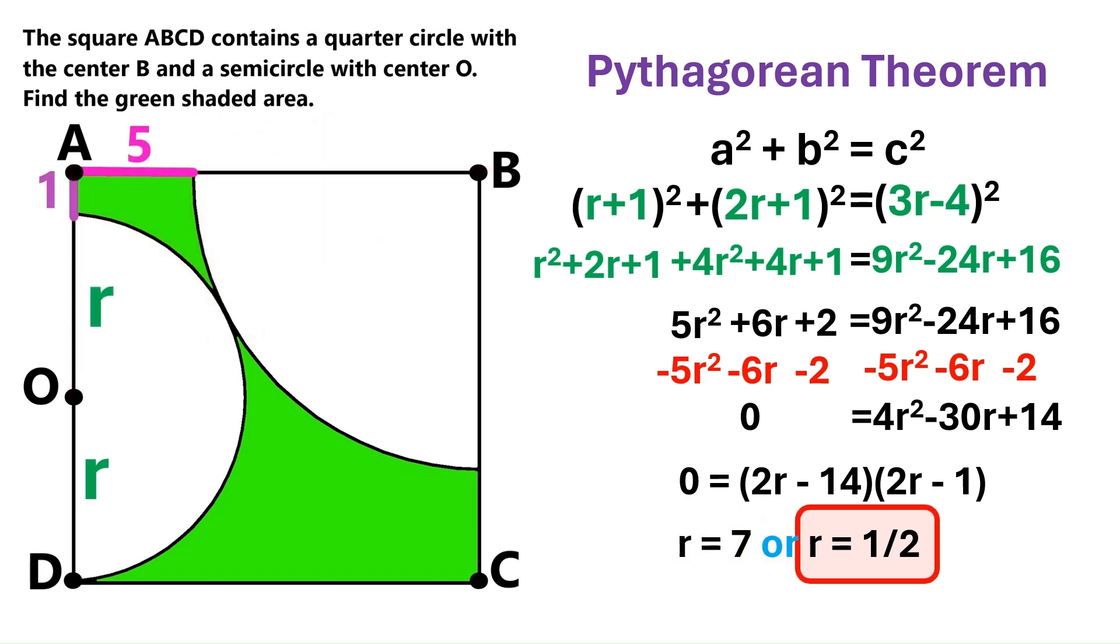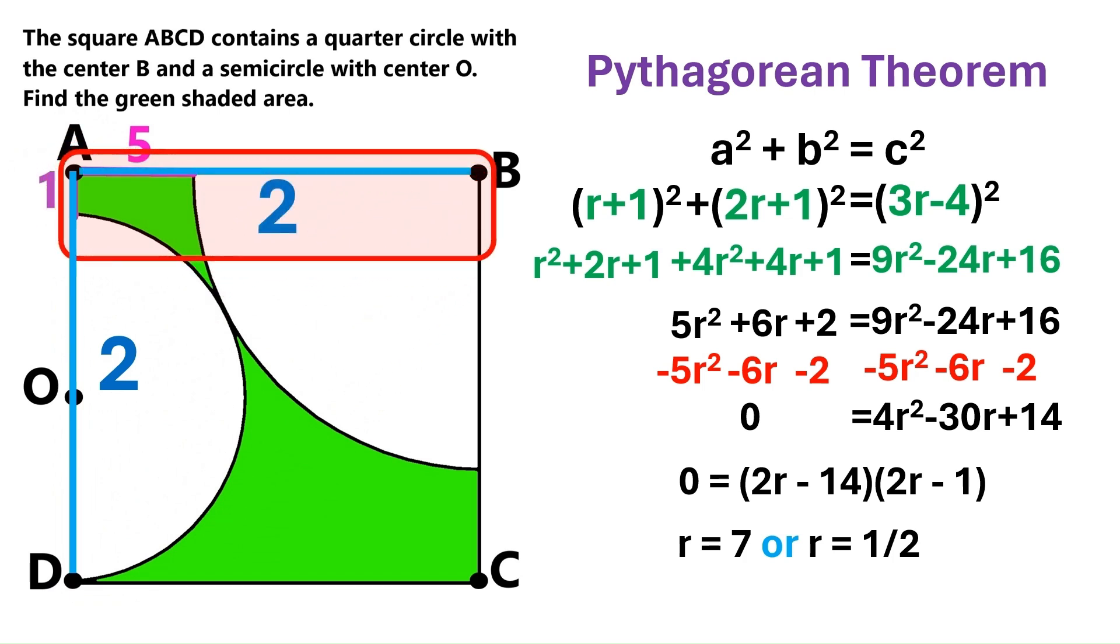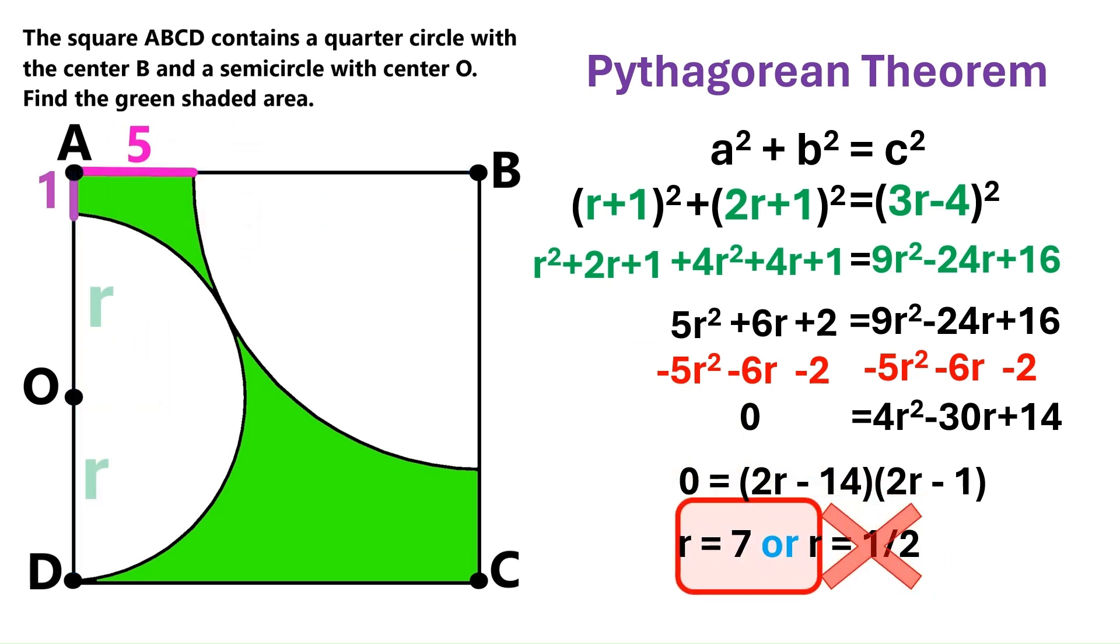Now, 1 over 2 looks weird and unlikely as a value for the radius of our semicircle. So let's try it to see what happens. r is this radius over here. So let's go ahead and replace both of these radii with 1 over 2. This distance has to be 1. And we've got another distance 1 over here. So the side of the square turns out to be 2. And that means this side AB must also be 2. But hold on a second. This line segment over here is 5. It's bigger than 2. And the part cannot be bigger than the whole. So the side of the square cannot be 2. And r cannot be 1 over 2.